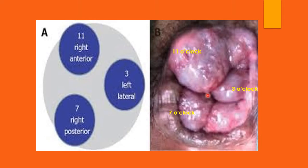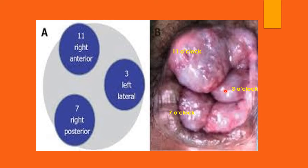When looking at a prolapsed hemorrhoid, they can be described according to the positions on a clock face. The primary hemorrhoids occur at the 3 o'clock position (left lateral), 7 o'clock position (right posterior), and 11 o'clock position (right anterior). Secondary hemorrhoids lie in between these primary ones. These three primary hemorrhoids correspond to the three branches of the superior rectal artery that supply these three structures.